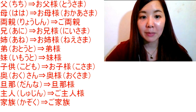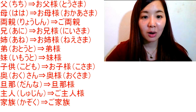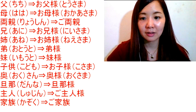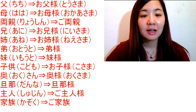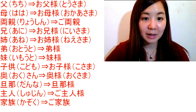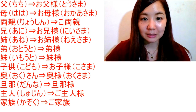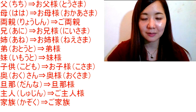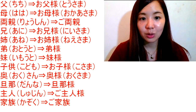Kodomo is my kids, and oko-sama is your kids. Oku-san is my wife, and oku-sama is your wife. Dan-na is my husband, and dan-na-sama is your husband. Shu-jin is also my husband — another way to say dan-na — and go-shu-jin-sama is your husband. Ka-zoku is my family, and go-ka-zoku is your family.